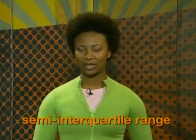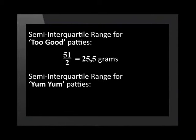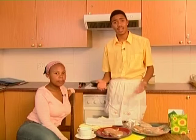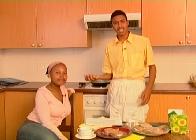Sometimes researchers take this interquartile range and divide it in half again to find the semi-interquartile range. This gives you an even smaller range within the middle part of your data. The semi-interquartile range for the Two-Good patties will be half of 51, that's 25.5 grams. And the semi-interquartile range for the Yum-Yums will be half of 13 grams, that's 6.5 grams. So it's not about the Two-Goods being slightly bigger — it's about the large spread of weight.